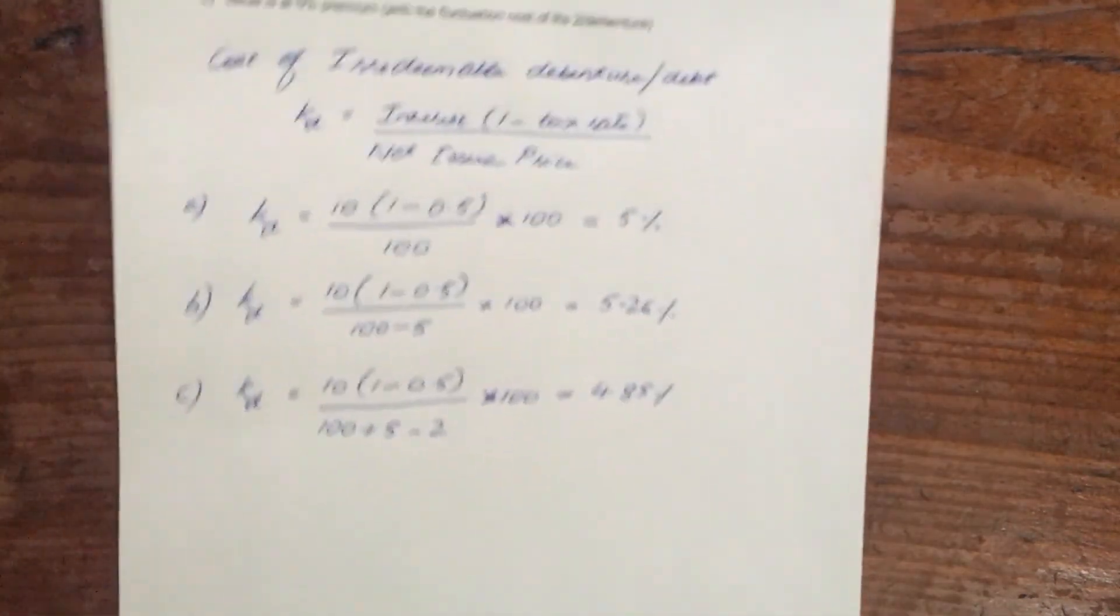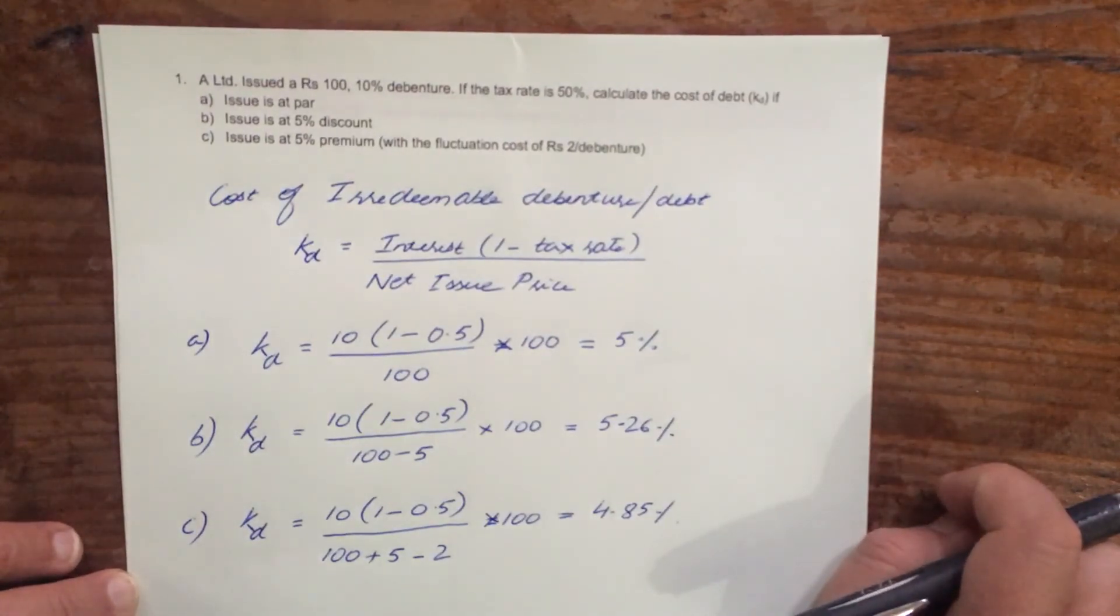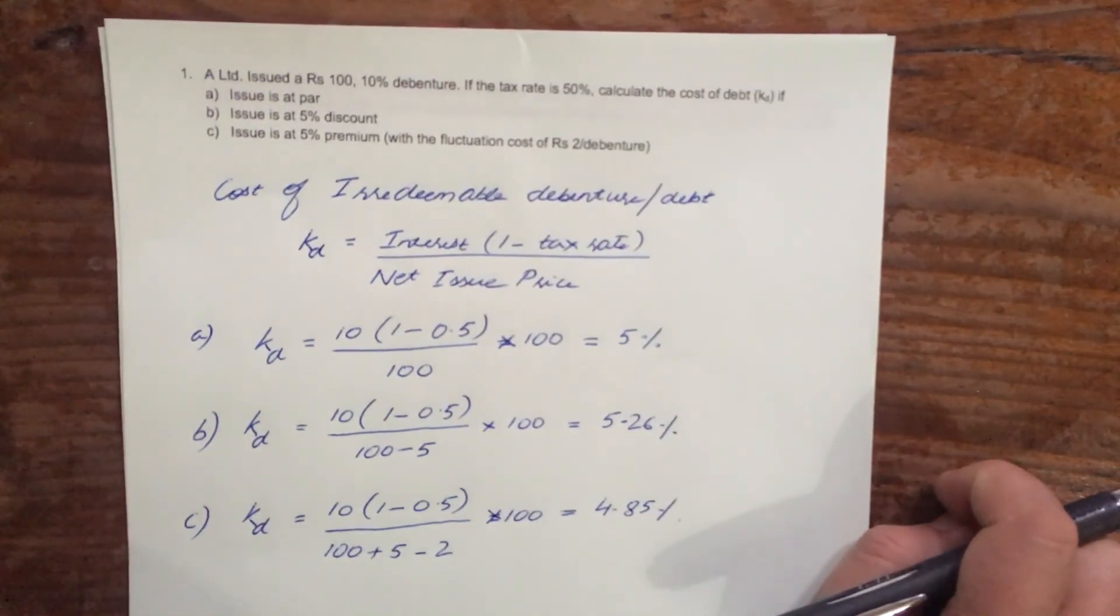So that is how you solve this problem - cost of irredeemable debenture or debt, Kd.